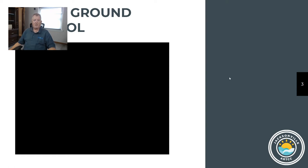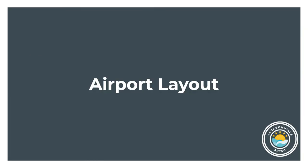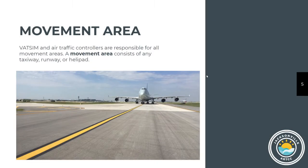And we're back. Let's talk about airport layouts. In order to control taxiing on the airfield you need to know the layout of the airfield. You're going to be responsible for all the movement areas. The movement area is anything that is a taxiway, runway, or helipad.